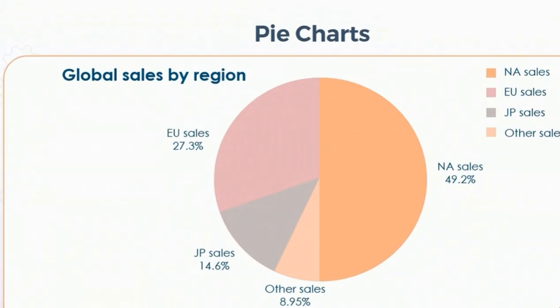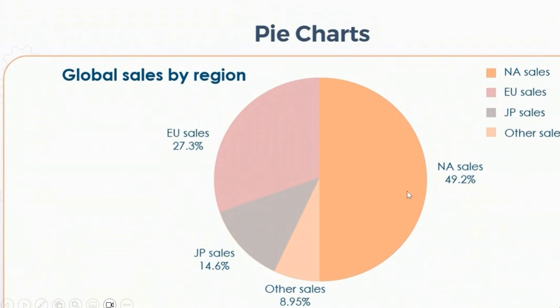Now we are moving towards pie charts. Pie charts are ideal for identifying composition at a special moment in time. They give information in the form of a circle, which is why they are named pie charts. In this chart, we are showing global sales by region. We have four different regions for which we are representing global sales. Pie charts are useful for representing whole value or percentage value, and are really important when you want a very quick visual. A pie chart consists of slices and angles in a circle.